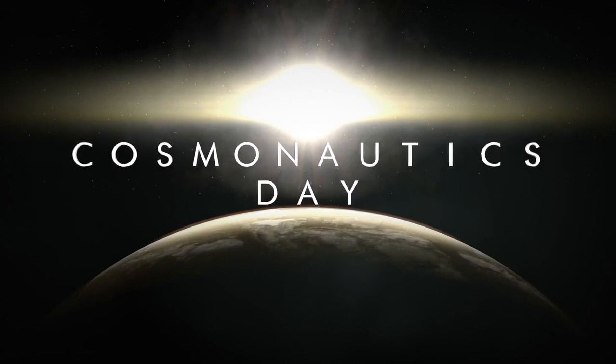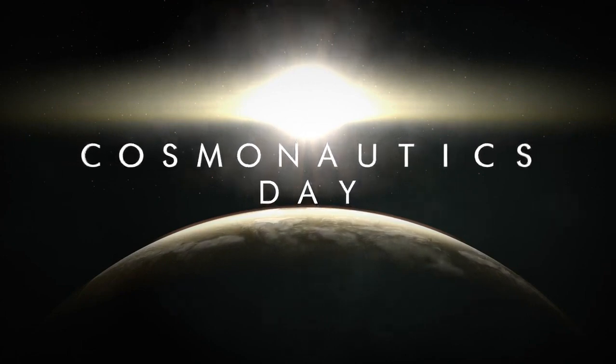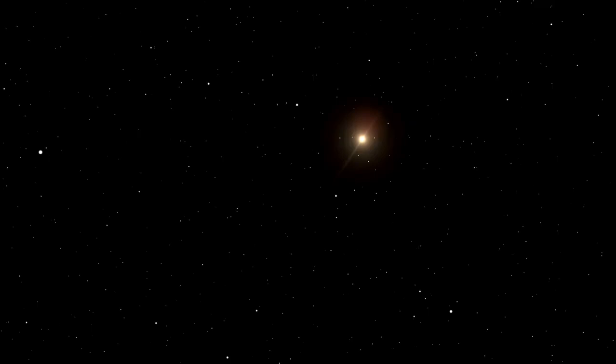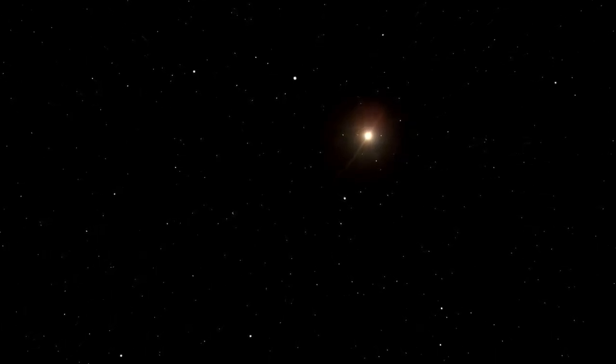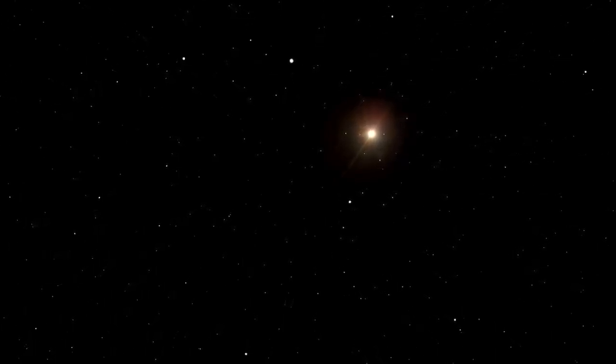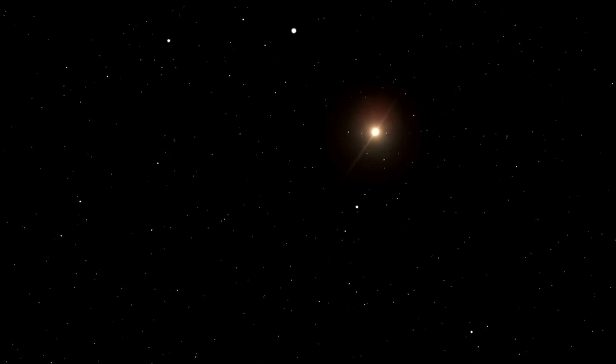Stars, while appearing calm and steadfast from Earth's vantage point, are anything but tranquil. Betelgeuse, long classified as a pulsating red supergiant, is a dynamic star whose brightness varies in cycles ranging from 10 to over 2,000 days.